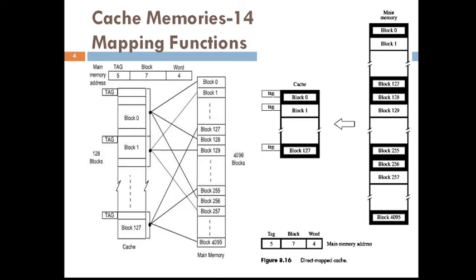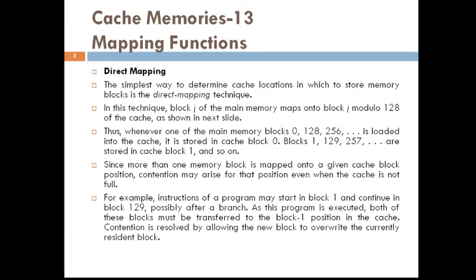Since more than one memory block is mapped onto a given cache block position, contention may arise for that position even when the cache is not full. Because multiple blocks of the main memory are mapped to one block in the cache, a contention will arise among themselves even though the cache is not full — they will contend for the position to be taken in the cache.